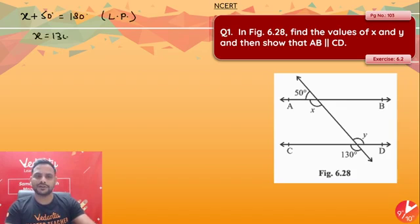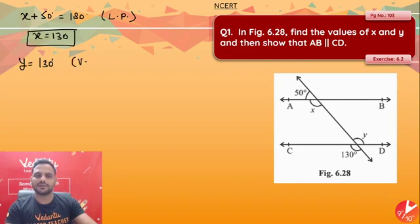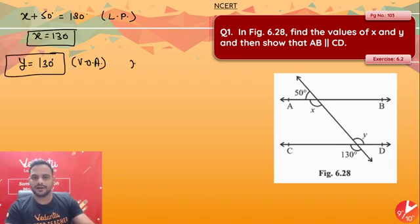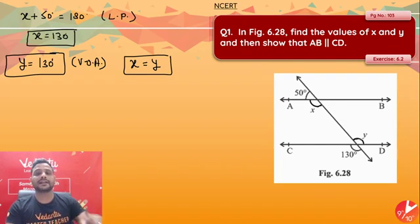Similarly, y will be equal to 130 degrees because of the vertically opposite angle theorem. So y is equal to 130 degrees. We can clearly see from these two parts that x and y are equal, and if angle x and angle y are equal to each other, they are also a pair of interior alternate angles. If interior alternate angles are equal, the lines will be parallel.